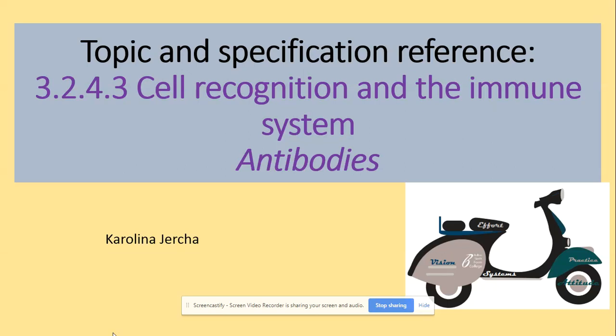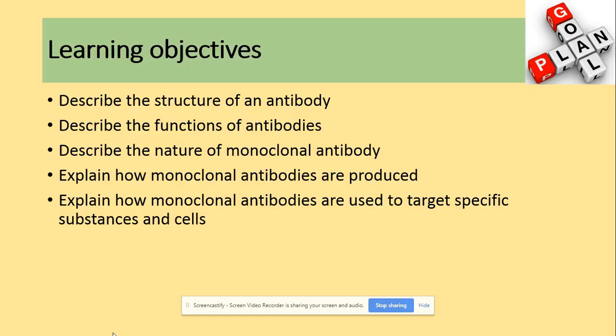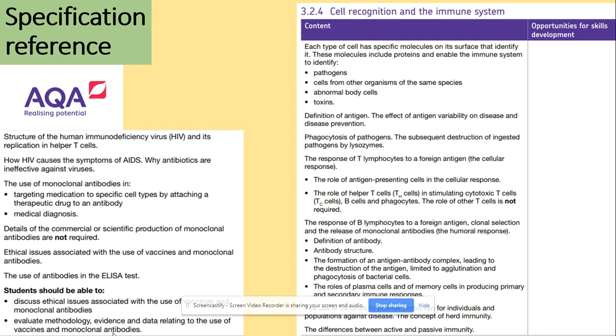Hi guys. We will be looking at antibodies today. In terms of the learning objectives, you need to be able to describe the structure of an antibody, its function, describe the nature of monoclonal antibodies, explain how monoclonal antibodies are produced, and explain how monoclonal antibodies are used to target specific substances and cells.